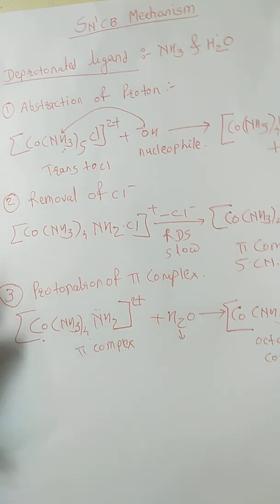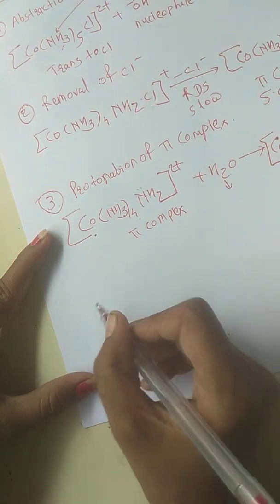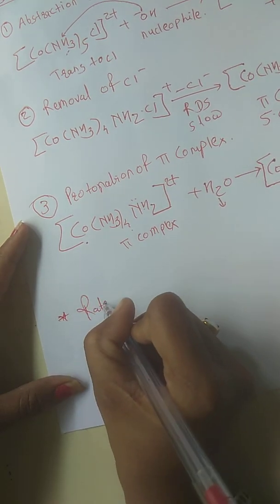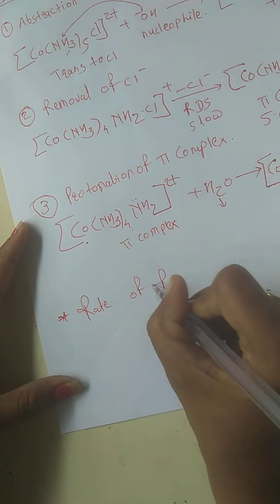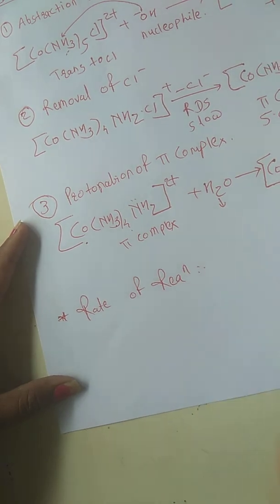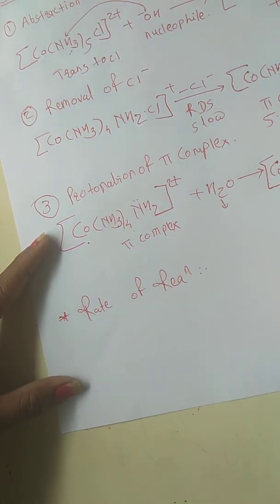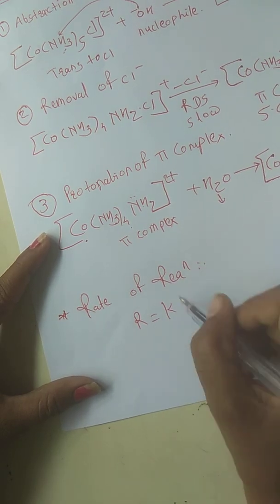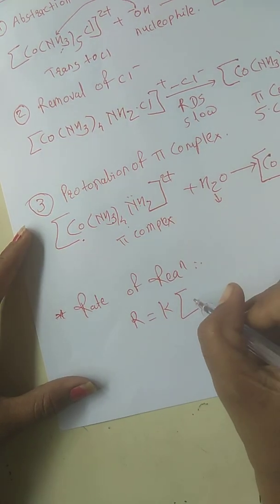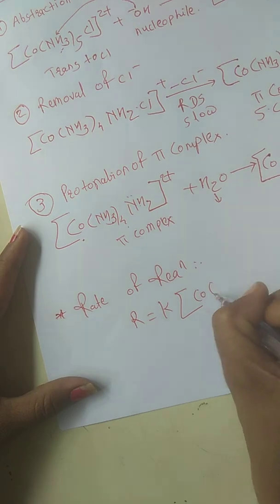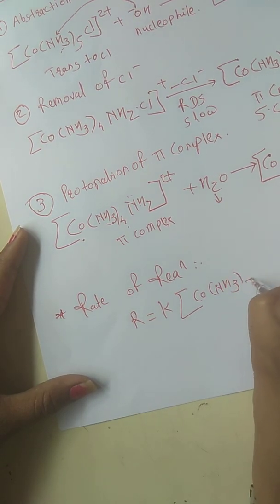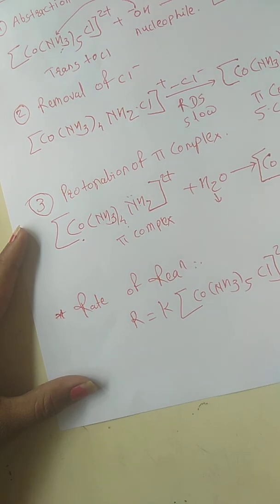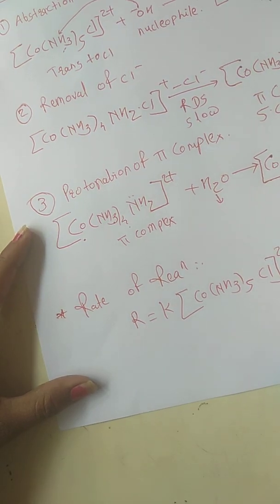Now we are focused on the rate of reaction. The rate of reaction R is equal to K multiplied by the concentration of [Co(NH3)5Cl]²⁺ and also on the concentration of our nucleophile.